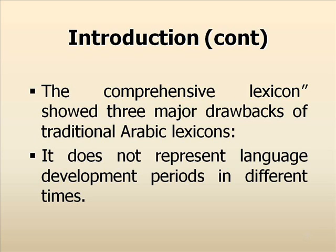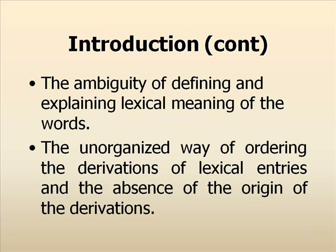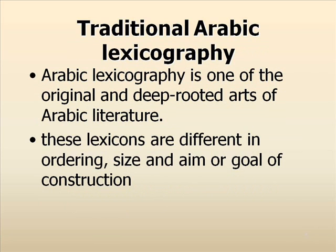It describes three major drawbacks of Traditional Arabic Lexicons. The first one: they do not represent language development across different time periods, as they were written in the 3rd, 4th, and 5th centuries. The second one: the ambiguity of defining and explaining the lexical meaning of words. The third one: the unorganized way of ordering the derivation of lexical entries and the absence of the origin of derivation.